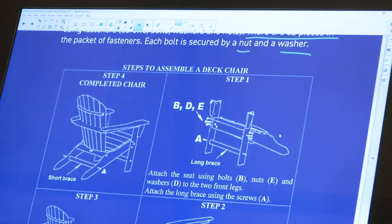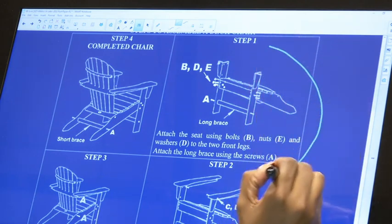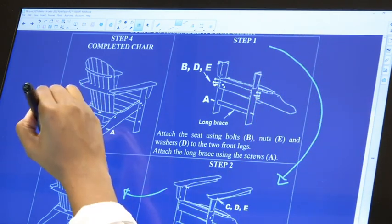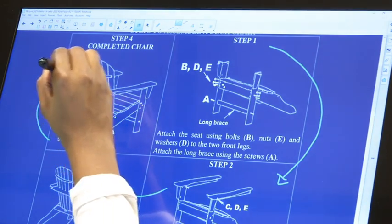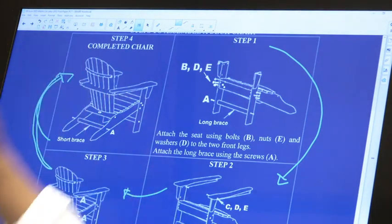So it says steps to assemble, we've got step one, step two, step three, and step four. So it goes in clockwise form and it starts over here and ends over there.